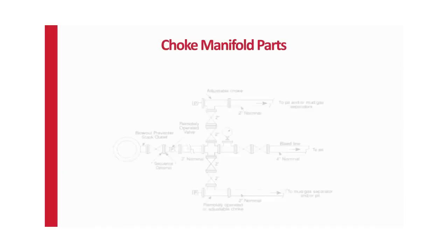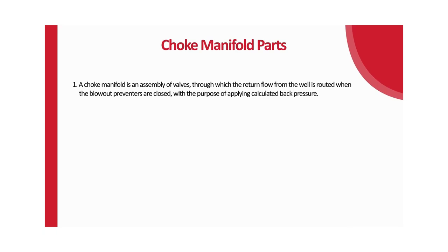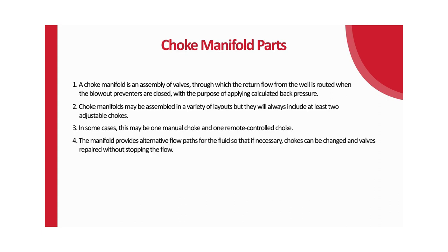Choke manifold parts. Let us see a typical choke manifold for 5,000 PSI working pressure service, surface installation. A choke manifold is an assembly of valves through which the return flow from the well is routed when the blowout preventers are closed, with the purpose of applying calculated back pressure. Choke manifolds may be assembled in a variety of layouts but will always include at least two adjustable chokes. In some cases, this may be one manual choke and one remote controlled choke. The manifold provides alternative flow paths so that chokes can be changed and valves repaired without stopping the flow. All high pressure parts of the manifold should have the same working pressure rating as the BOP stack.